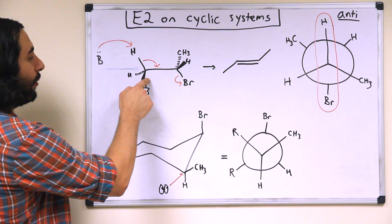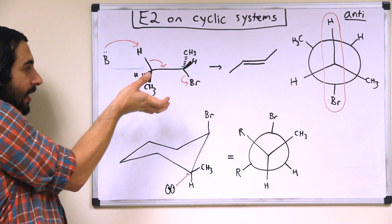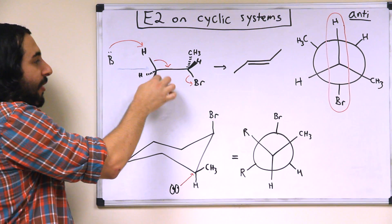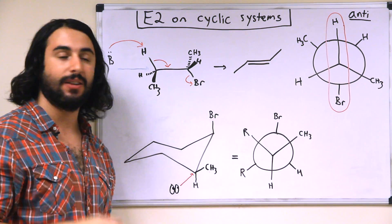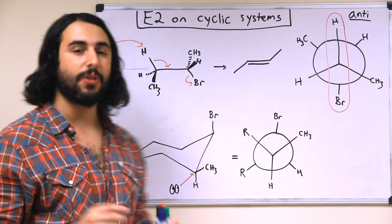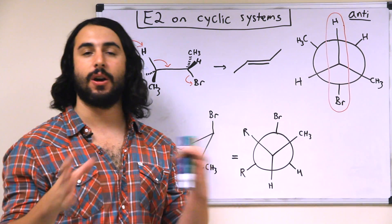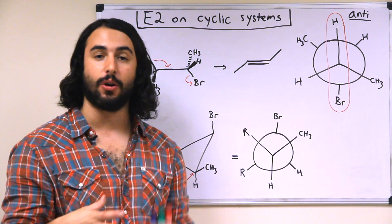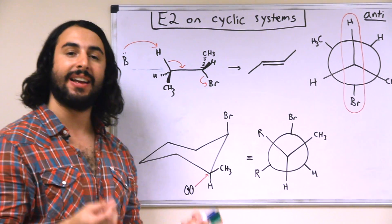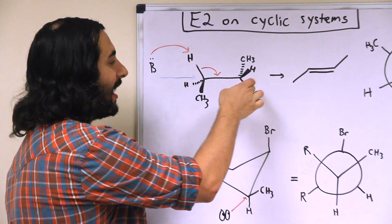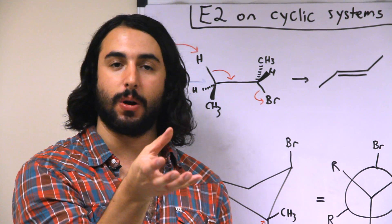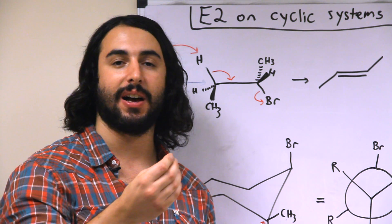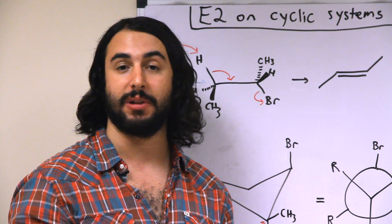Let's say we rotate 120 degrees so that the methyl is up top here. We cannot have elimination in that configuration. Now with a linear system, we know that sigma bonds are rotating all the time, so if at any given instant the methyl group were anti to the bromine, that's okay, because it will simply rotate until a proton is in the correct position to allow for elimination to occur.